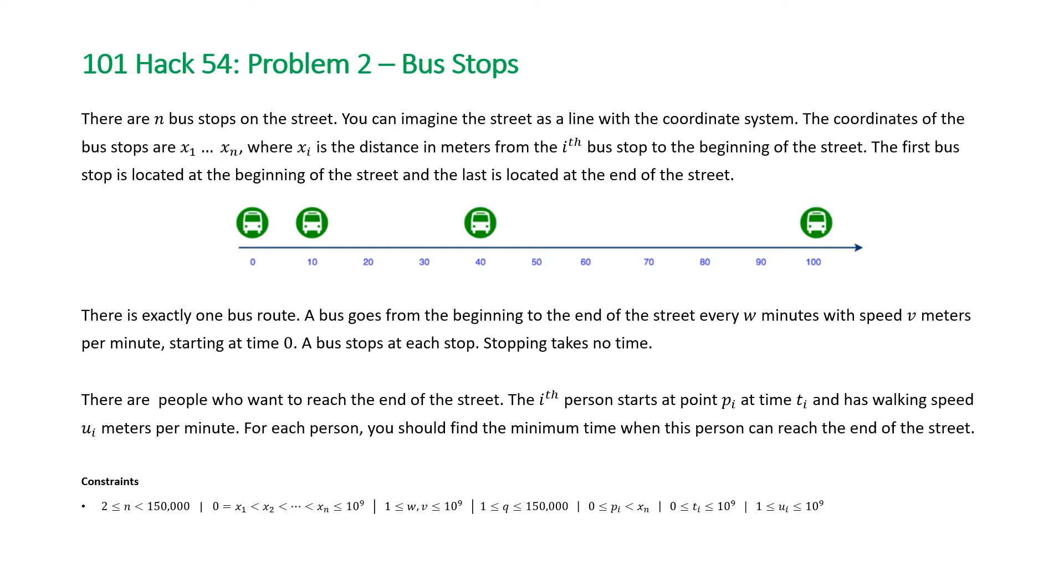There is exactly one bus route. A bus goes from the beginning to the end of the street every w minutes with speed v meters per minute starting at time zero. A bus stops at each stop. Stopping takes no time.